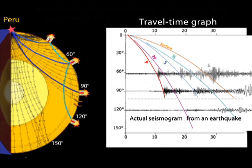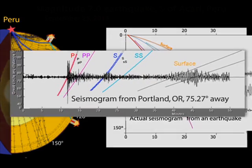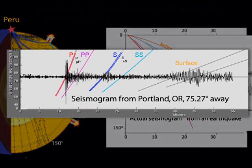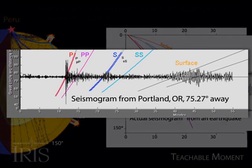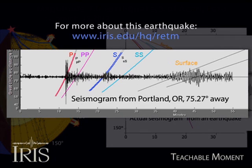This graph shows real seismograms collected from stations at these distances. Here is a seismogram from this earthquake collected from a station in Portland, Oregon, approximately 75 degrees away.